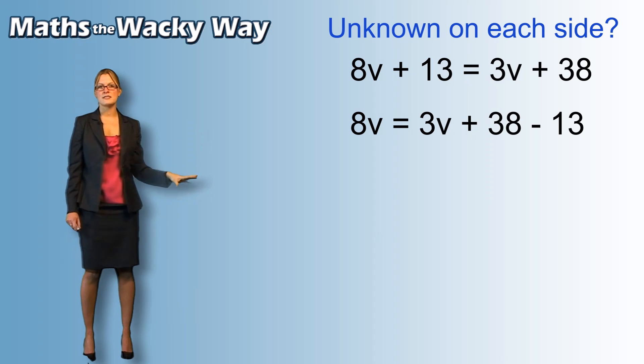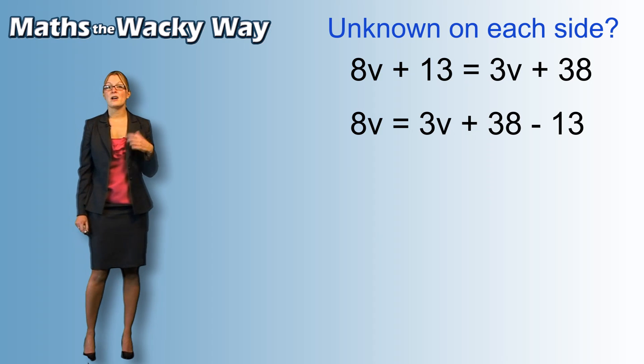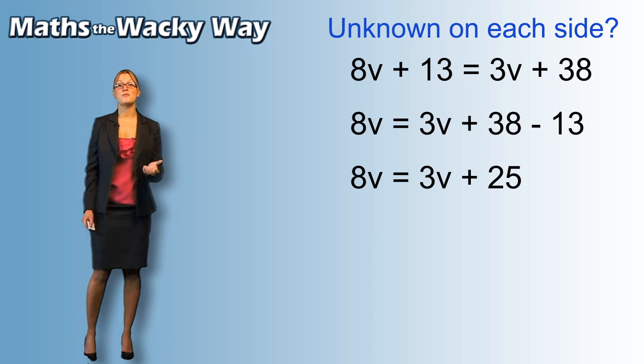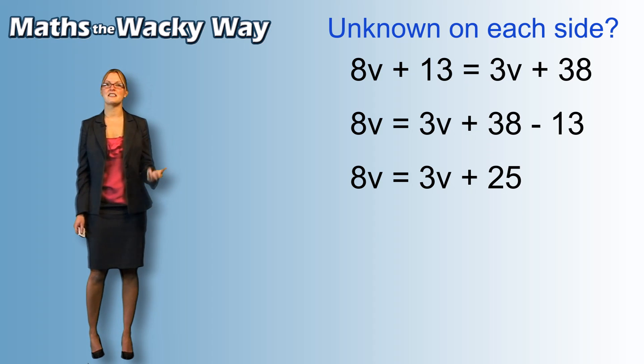So, that's all that's happening. We've just got that one movement but then we've got 3v plus 38 take away 13. Well, let's tidy it up. That's the same as 3v plus 25. So, bringing it all together, we have 8v equals 3v plus 25.